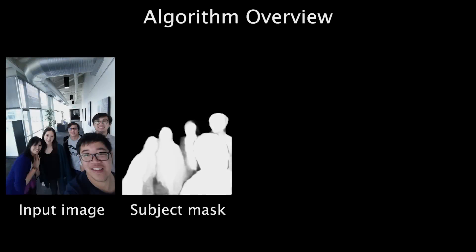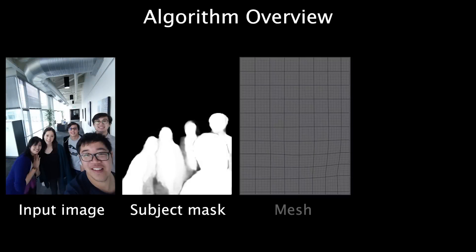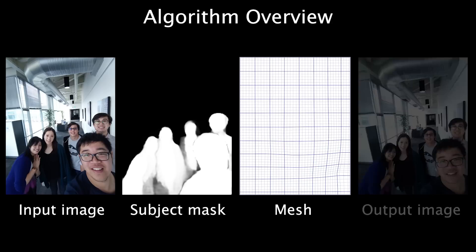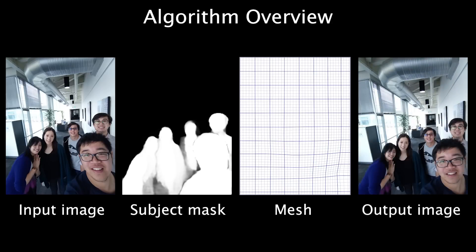Given an input image and the detected subject mask, we compute a mesh that adapts to the stereographic projection on face regions, while keeping the background unchanged. After optimizing the mesh, we warp the input image to obtain the corrected image.